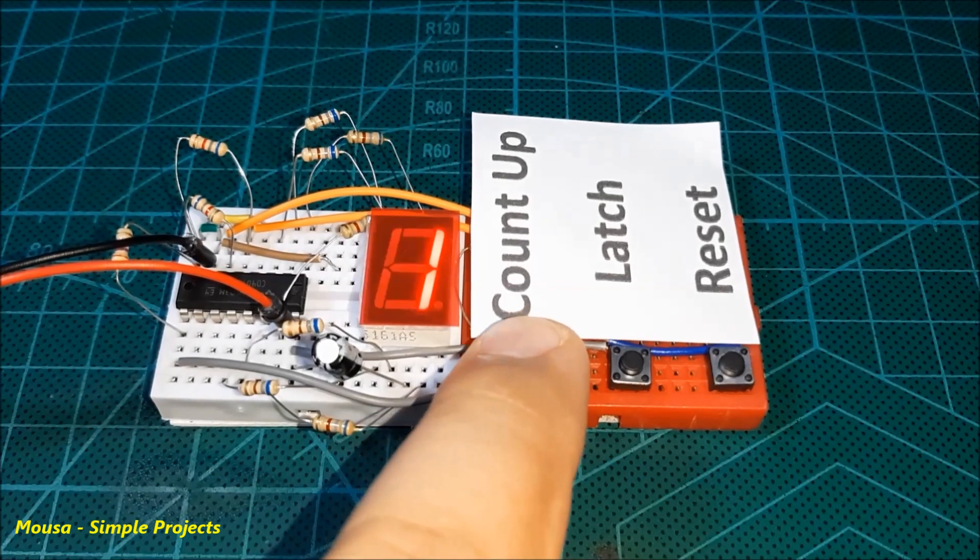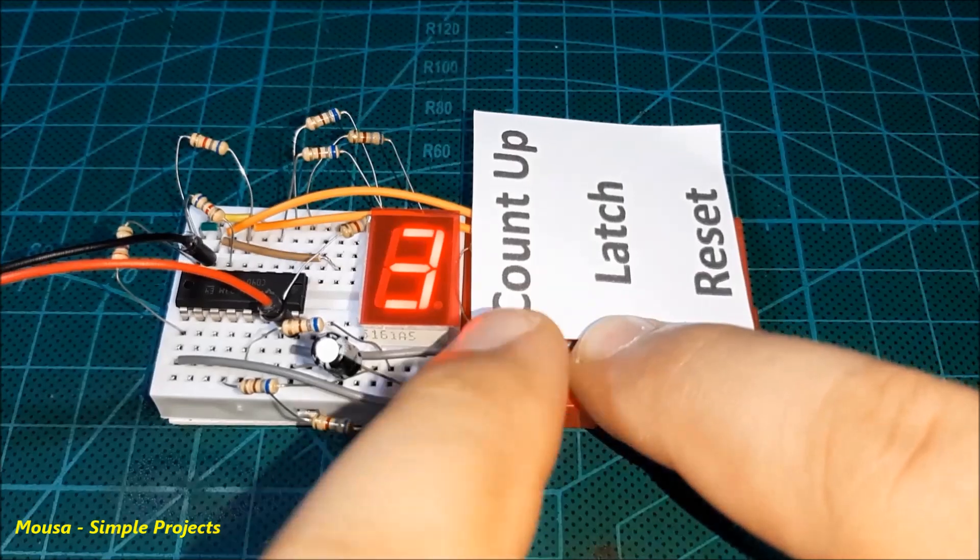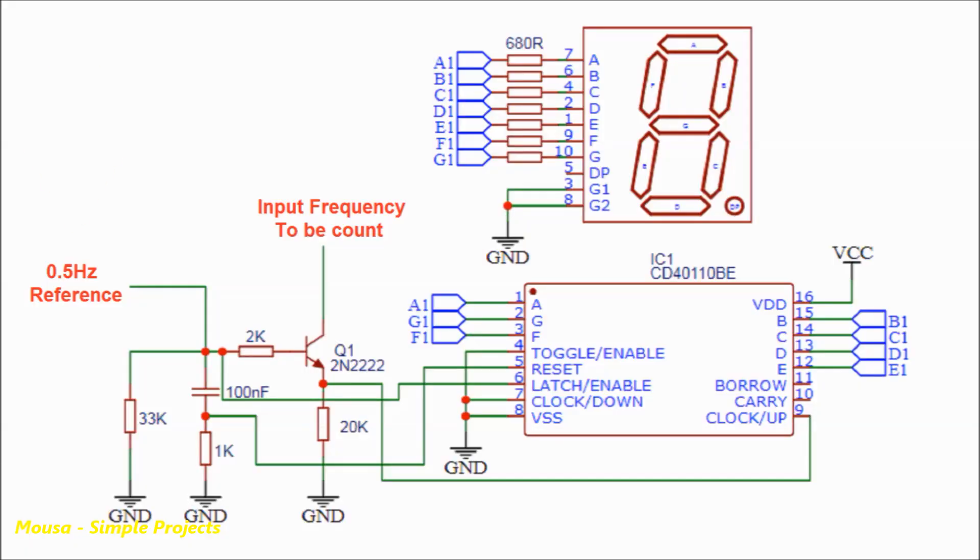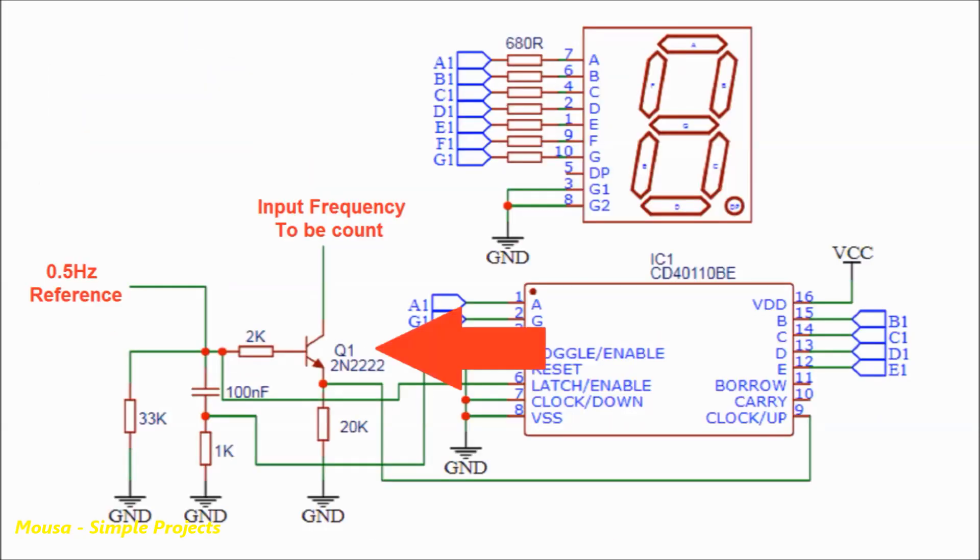Now I want to convert this single digit counter to a frequency counter to count the frequency up to nine hertz only. In this case, we need a 0.5 hertz oscillator to reset the counter every one second using this transistor and connect the collector to the input frequency to be counted. The base of the transistor is connected to 0.5 hertz oscillator.